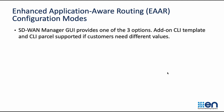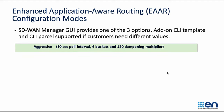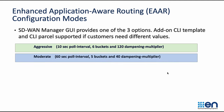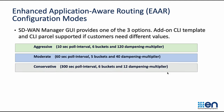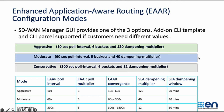Configuration modes: SD-WAN Manager provides three default options for customers to configure. Aggressive gives convergence anywhere between 10 seconds and 1 minute. Moderate gives convergence anywhere between 60 seconds and 5 minutes. And conservative gives convergence between 5 minutes and 30 minutes. Customers can choose one of these three default options to meet their application requirements. If the SLA dampening window needs to be customized, they can change it using the CLI add-on template or CLI parcels inside SD-WAN Manager. The recommendation is to not change the poll interval to less than the default 10-second poll interval.